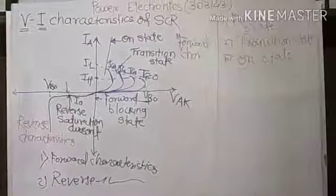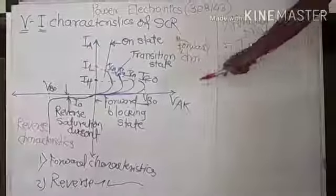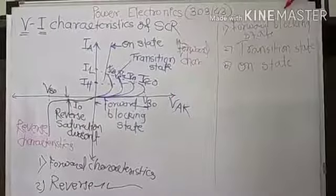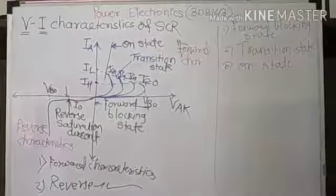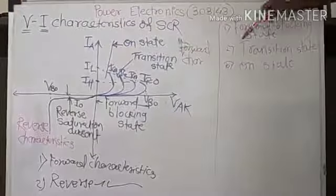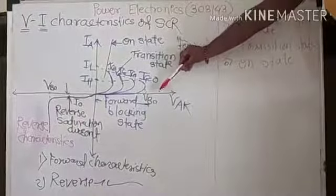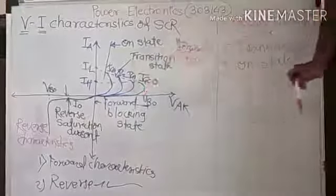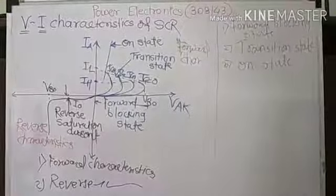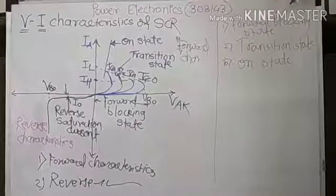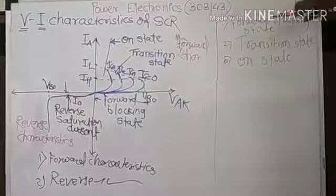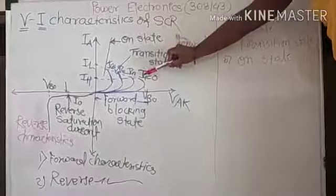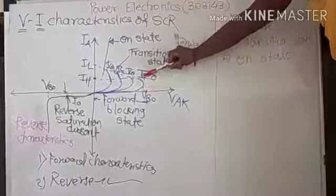The first state is the forward blocking state. In this state, the applied voltage VAK is smaller than the breakover voltage, and SCR is in the OFF condition. This is a high voltage, low current state — the voltage range is large but the current flowing is very small.